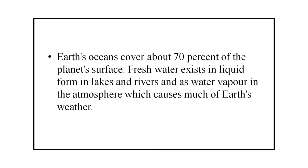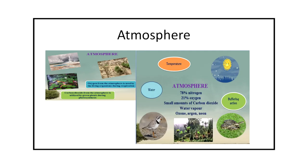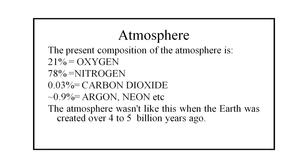At one time the Earth was all water on its surface. Ocean covers about 70 percent of the planet's surface. Fresh water exists in liquid form in lakes and rivers, and as water vapor in the atmosphere, which causes much of Earth's weather. The next condition for sustaining life is atmosphere. The most important components of the atmosphere are oxygen, carbon dioxide, and water vapor. The present composition of the atmosphere is 21 percent oxygen, 78 percent nitrogen, 0.03 percent carbon dioxide, and less than 0.9 percent argon and neon.